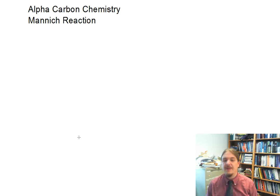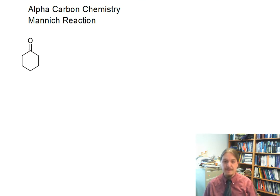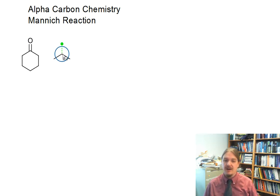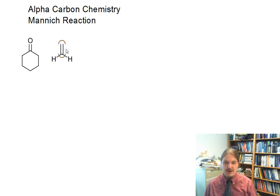In this video I'm going to talk about the Mannich reaction. The Mannich reaction is an interesting application of alpha carbon chemistry where you react a ketone generally with an aldehyde. I'm going to choose formaldehyde for the moment. Formaldehyde is the most common aldehyde used for this, and we'll see why in a minute.